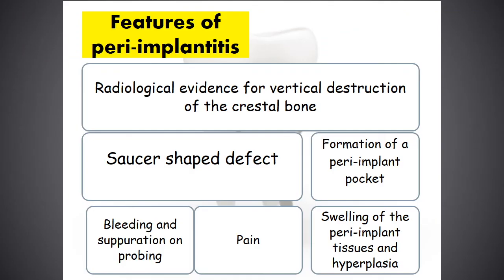The features of peri-implantitis include radiological evidence for vertical destruction of the crestal bone, saucer-shaped defects, formation of a peri-implant pocket, bleeding and suppuration on probing, pain and swelling of the peri-implant tissues, and hyperplasia.